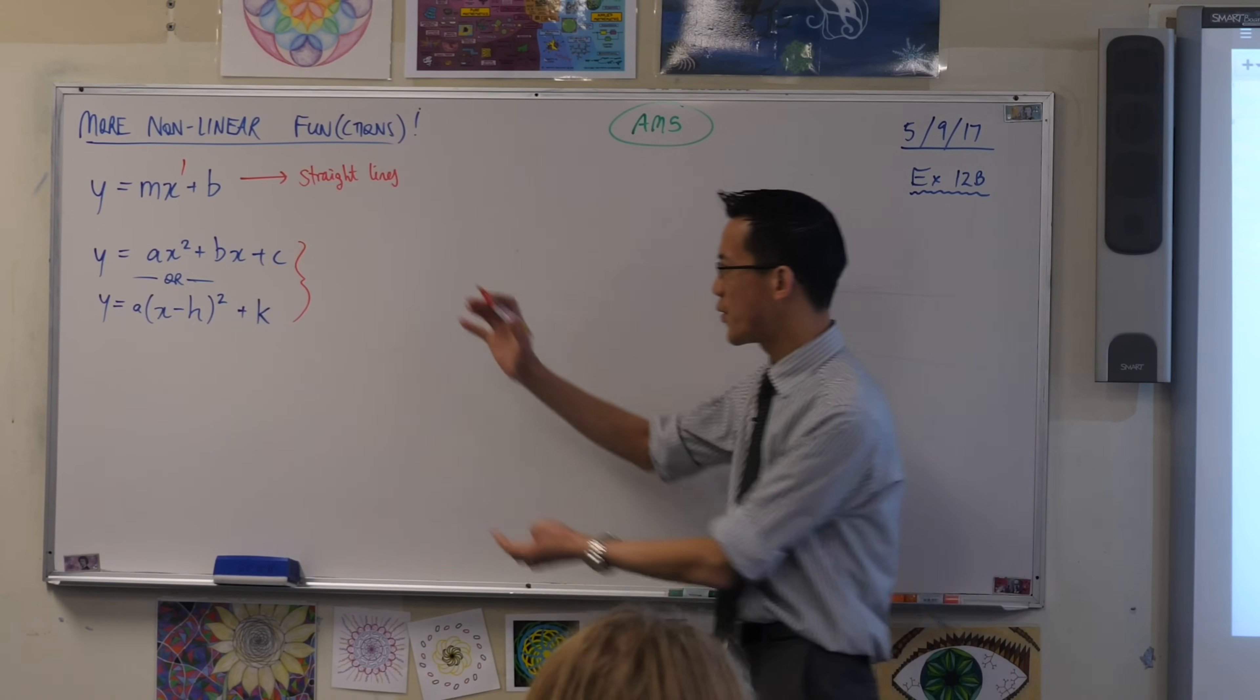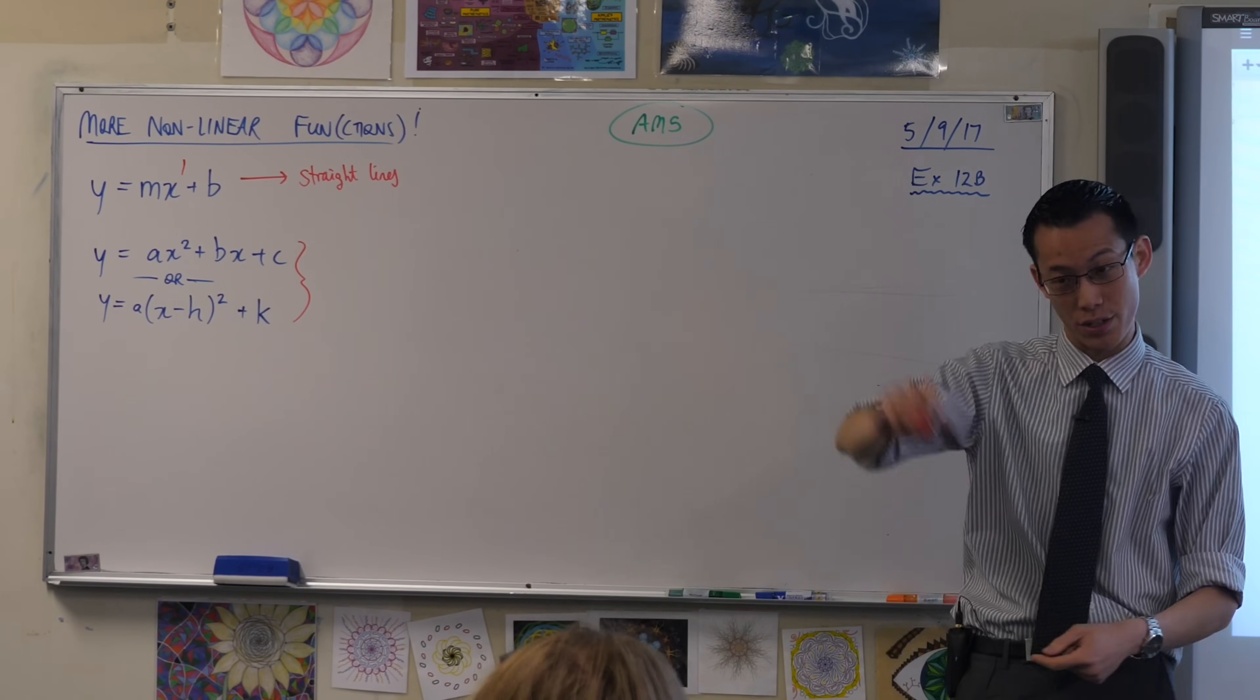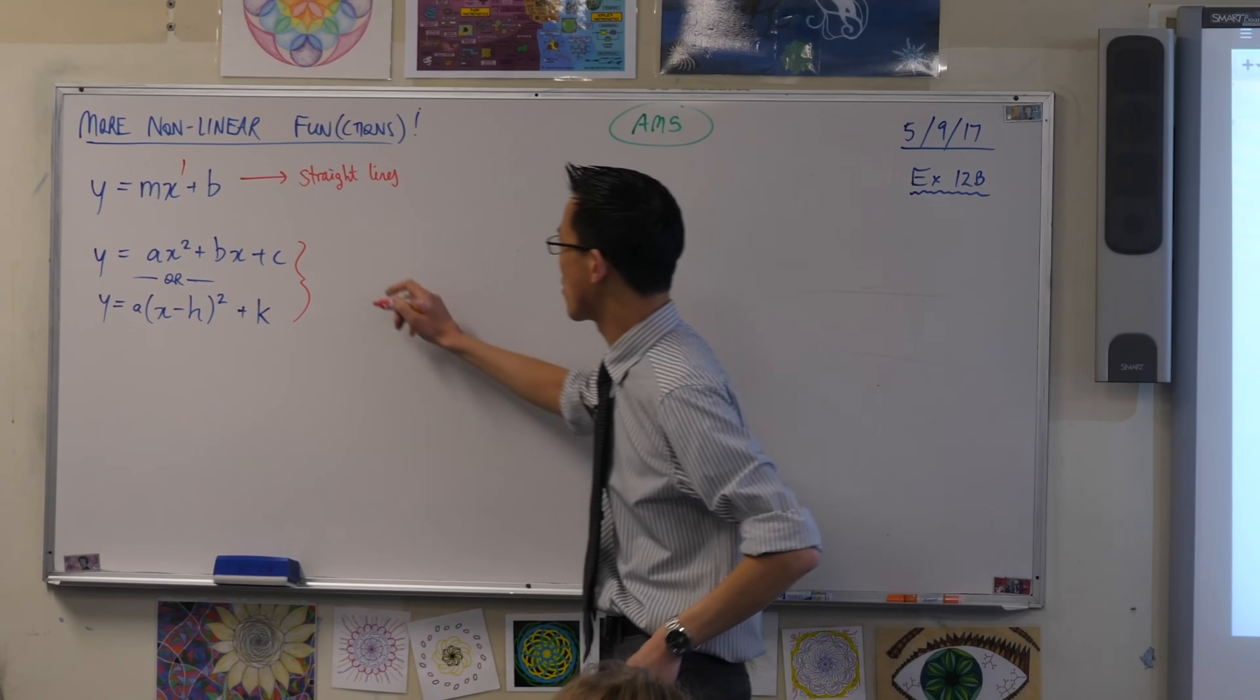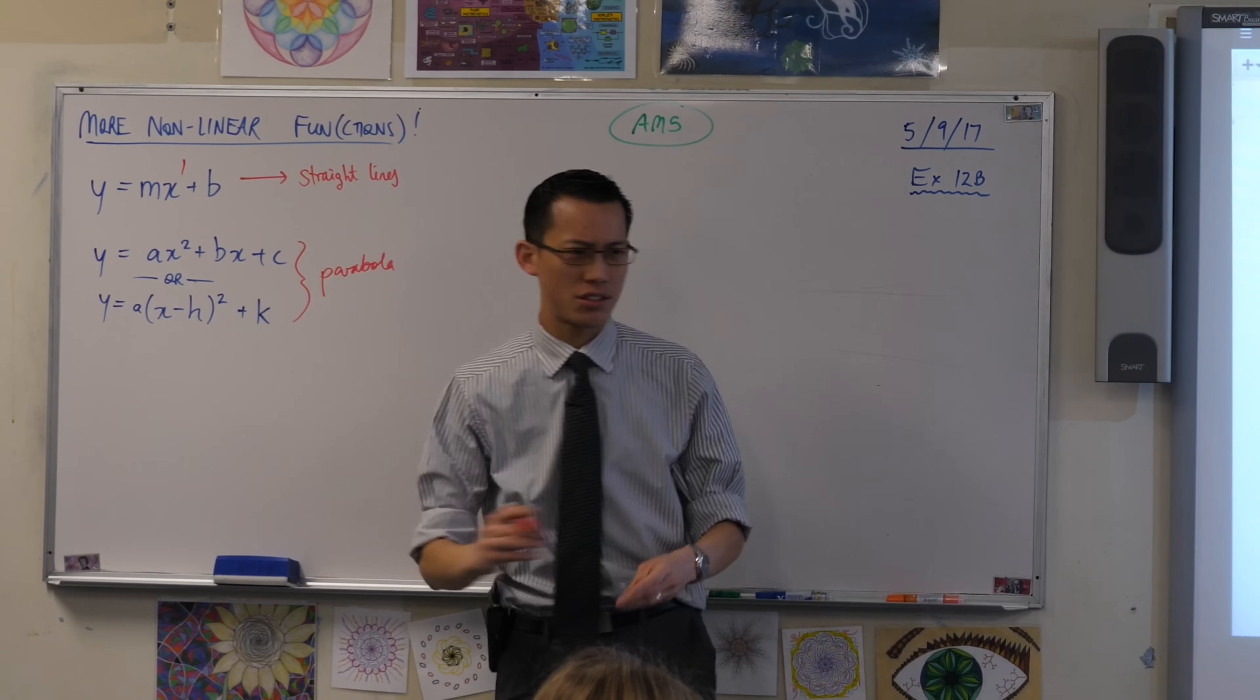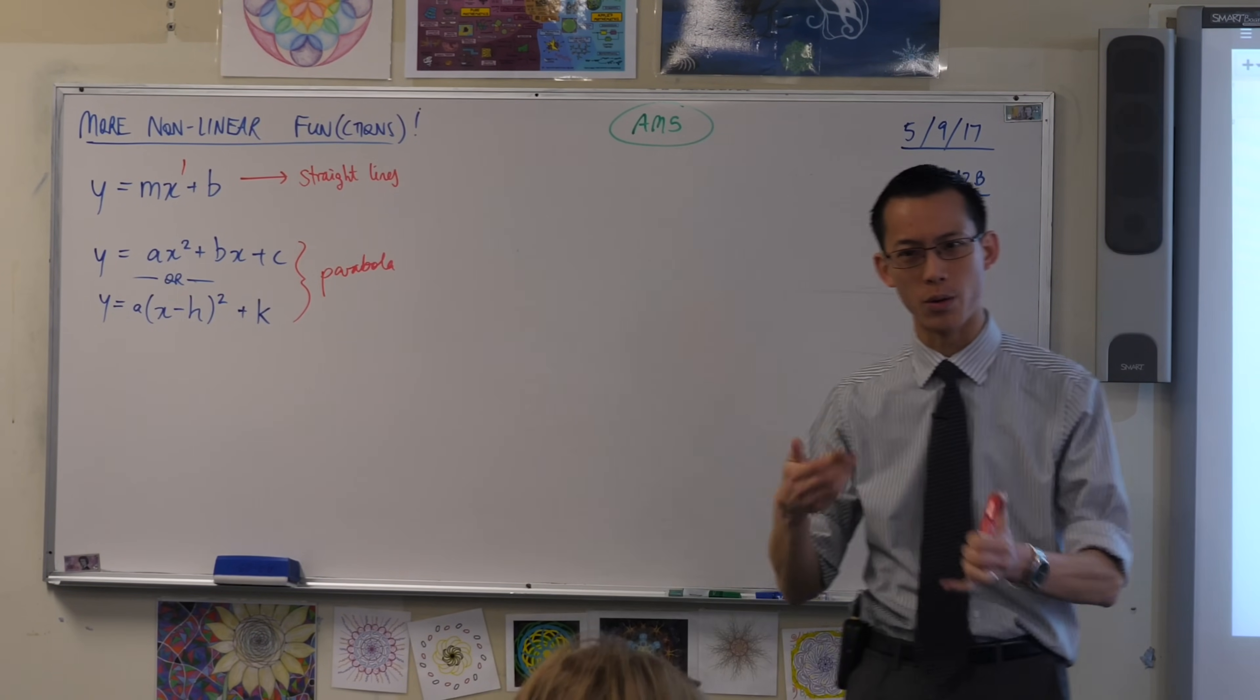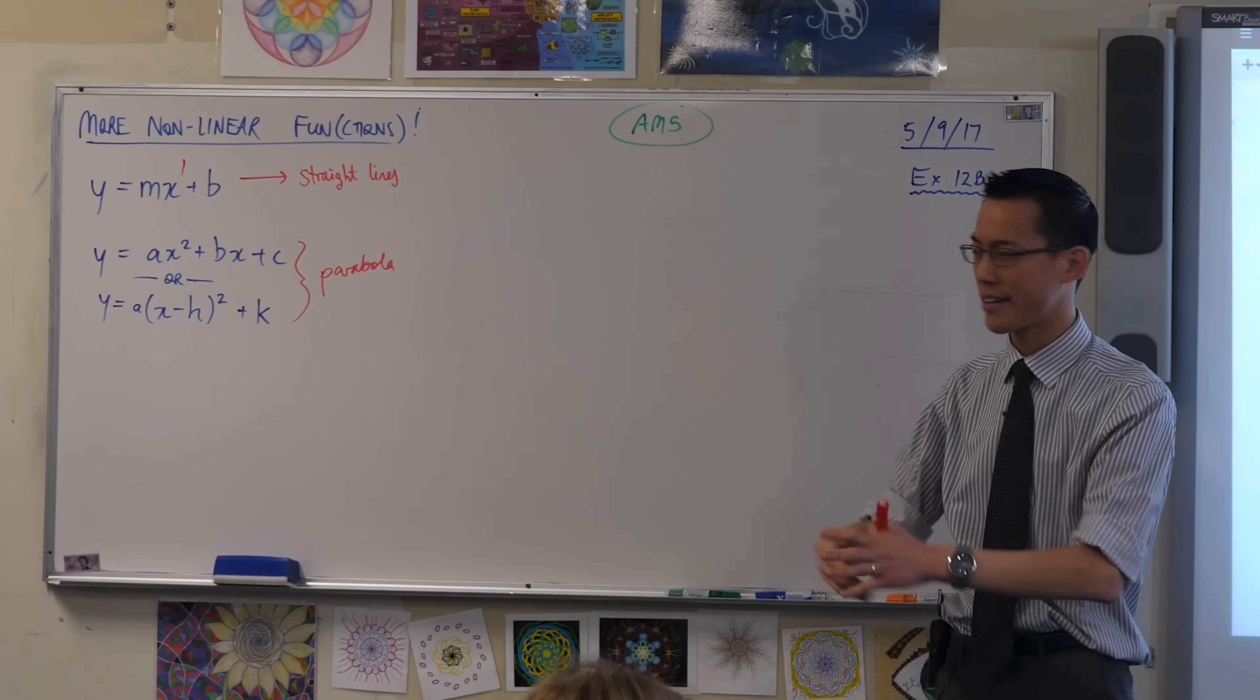Bit of a funny thing, quadratic means like when we look at the algebra, but when we think of the shape, that kind of characteristic curve, the shape is called a parabola. So just distinguish between those two. When you say quadratic, you're talking about the algebra. When you say parabola, you mean what does it look like, okay?